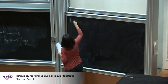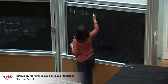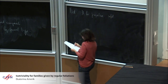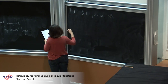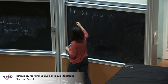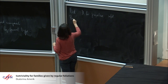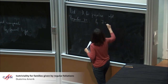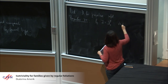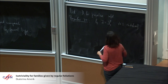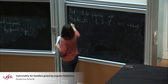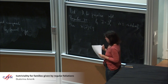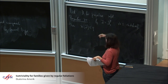Let X be a projective manifold, and consider rank-one subsheaves of Omega^p(X). Bogomolov, in 1979, proved that if L is a rank-one subsheaf of Omega^p(X), then the Kodaira dimension of L is less than or equal to p. Moreover, if it equals p, then L comes from a rational map: there is a rational map from X to Y, where Y is p-dimensional.